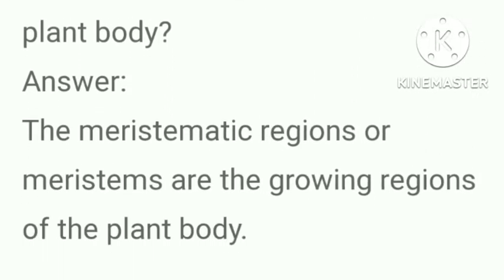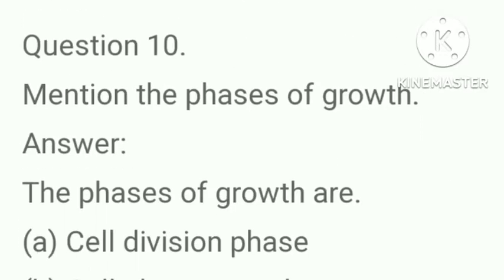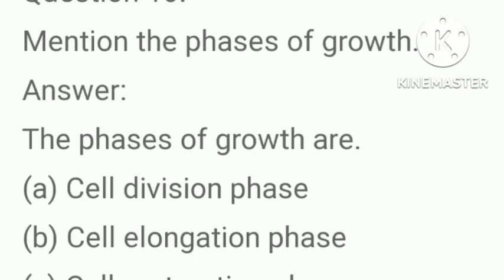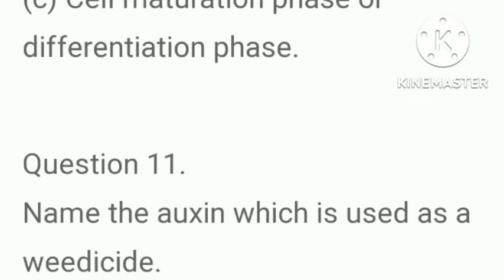What are the growing regions of the plant body? Answer: The meristematic regions or meristems are the growing regions of the plant body. Mention the phases of growth. Answer: The phases of growth are cell division phase, cell elongation phase, and cell maturation phase or differentiation phase.